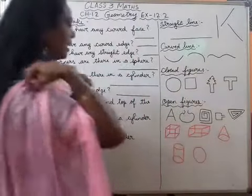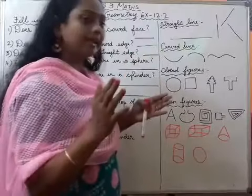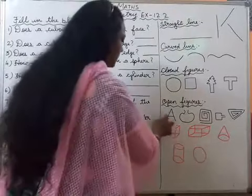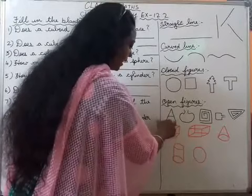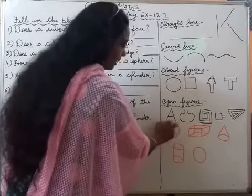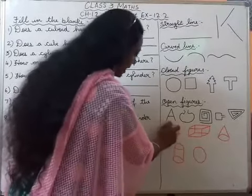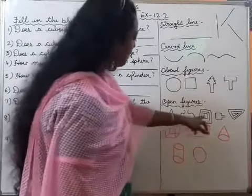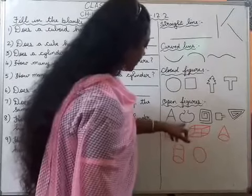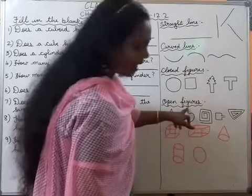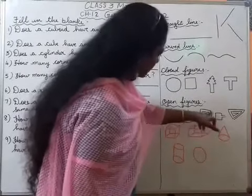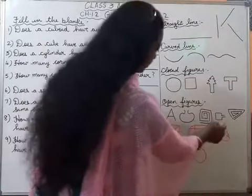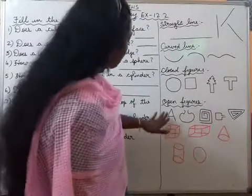Open figures — open figures mein matlab starting and ending point don't touch each other. Like the letter A — starting point and ending point are not touching each other. So these are called open figures. I have given some open figures examples. This is a pot, but it is open at the top. See this figure also — it is going on and on, it is not ending.